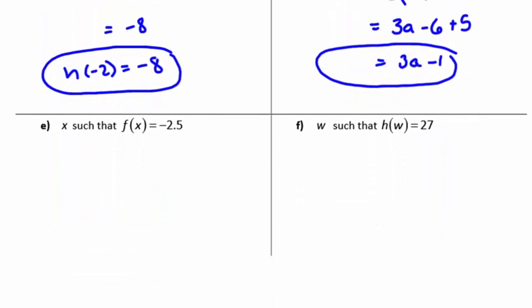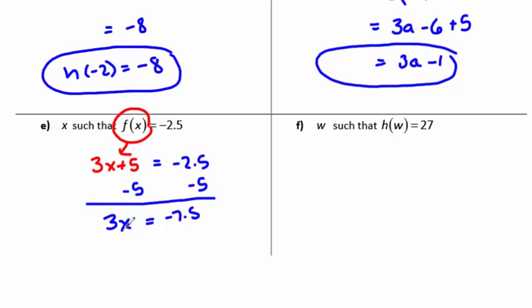In part e, we want to find x such that f of x equals negative 2.5. If I remember my equation correctly, I know that f of x is the equation 3x plus 5, and I want to find out when this is equal to negative 2.5. So they're just asking me to solve that equation. This is how I would give directions to solve an equation for x. Solve it like we normally solve an equation by subtracting off the 5. We're trying to get that x by itself. So we've got 3x equals negative 7.5, and then we'll divide both sides by 3. I believe that gets you negative 2.5.